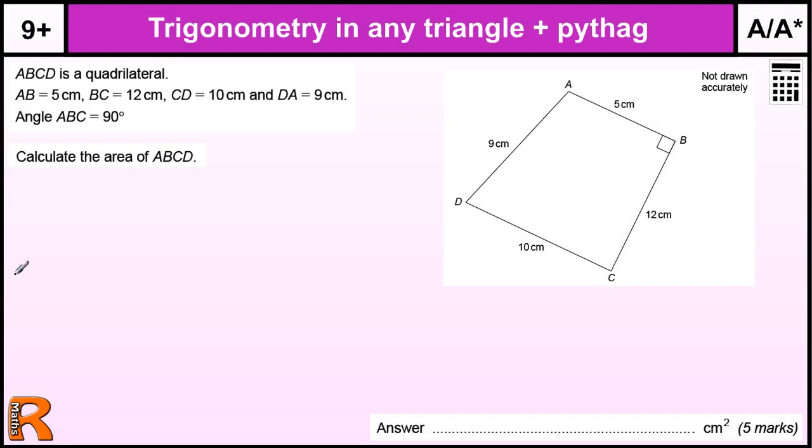Trigonometry in any triangle and a little bit of Pythagoras. So we've got to find the area of this quadrilateral which essentially is two triangles stuck together. If we break this quadrilateral up into two triangles along AC...